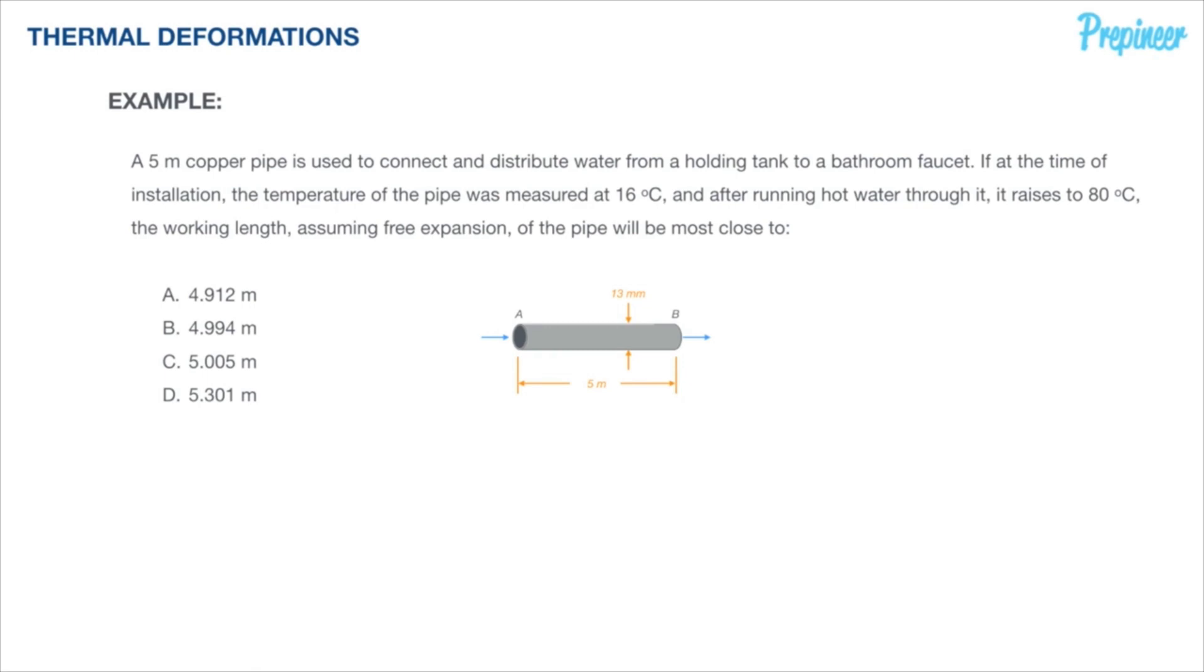In this problem we have a few new terms. We have a pipe that is installed originally at some initial length but it has a working length which we are asked to define. This tells us that to some degree the length of the pipe will be changing or deforming when we put it into operation.